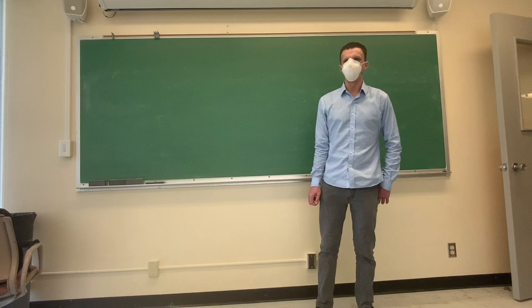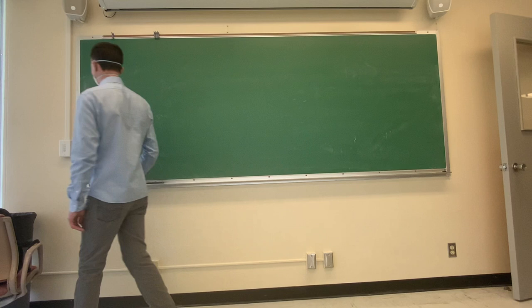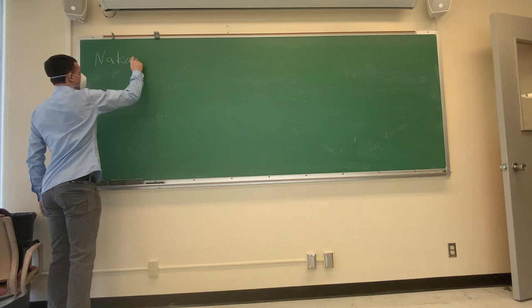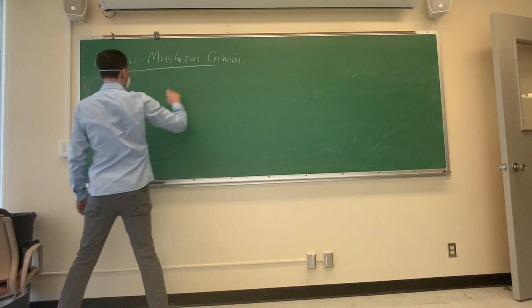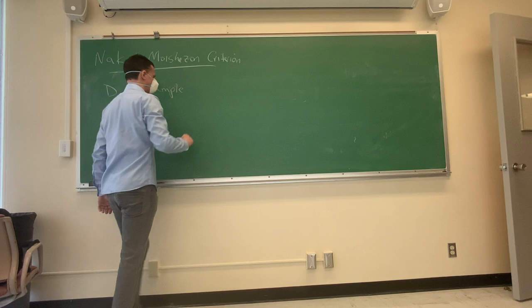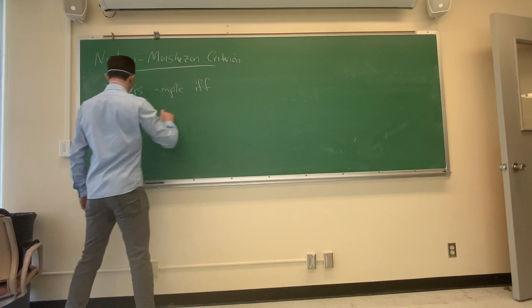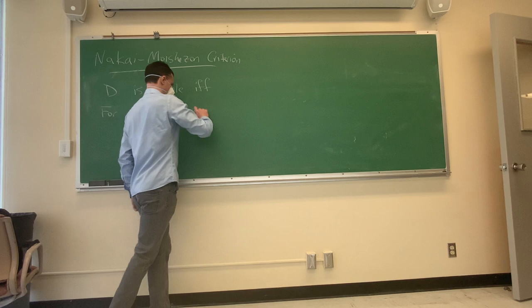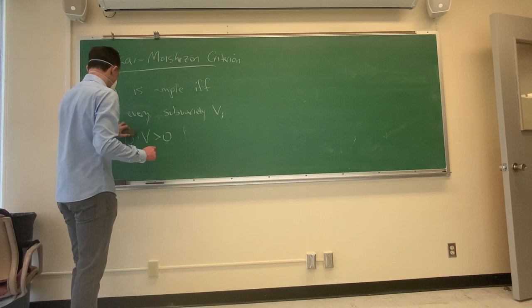Welcome back. Last time we talked about numerical criteria for ampleness and we proved the Nakai-Moishezon criterion. We didn't quite get to Kleiman's criterion, so let me remind you: the Nakai-Moishezon criterion says that a divisor or line bundle is ample on a variety X if for every subvariety V, E to the k dot V is positive, where k equals the dimension of V.